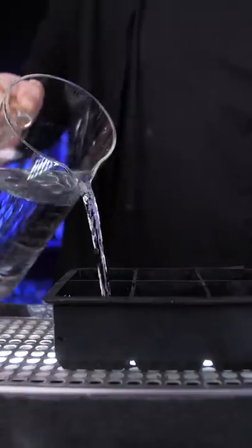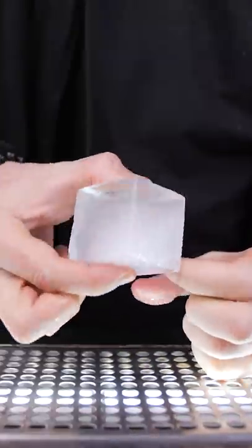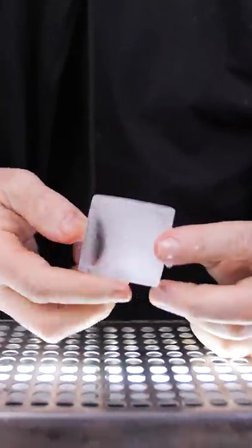When you pour water into the regular ice mold and put it into the freezer, it freezes fast from all directions so the air is trapped inside and your ice is cloudy.